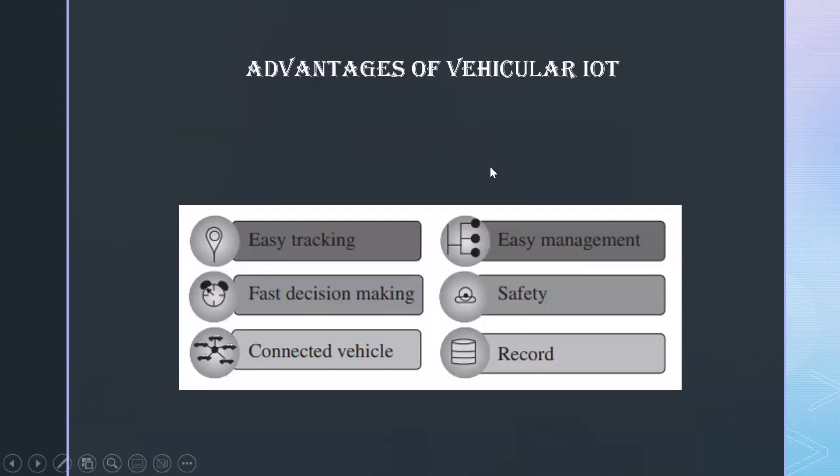Coming into advantages, as we have seen all the vehicular components, you can come up with telling that it is easy to track because of internal and external sensor. Fast decision making can be done because of your fog or cloud computing, and connection between your vehicles are done with your roadside unit. To manage all these sensors, roadside units, devices, wireless connectivity, satellites, it is easy to manage. A user can easily manage the traffic, management of traffic can be done easily. Safety purpose is obviously looked into because of alarms that is given by the sensors after sensing it. And proper records can be maintained because you are using a large scale cloud computing in it, so records are permanently saved. All these are the advantages that you can see in the vehicular IoT.